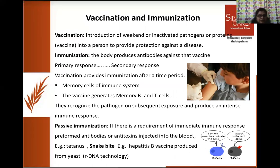During the primary response, our immune system develops memory cells — B cells and T cells. When the same pathogen attacks our body a second time, they produce an intense immune response to kill that pathogen. Through vaccination, you are inducing immunization in the body — you are making antibodies to produce inside your body.